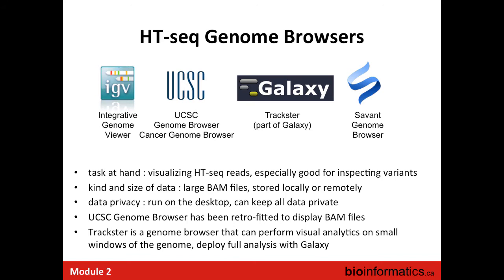I'm going to mention a few genome browsers, such as IGV, which we're going to look at in detail and use in the practical. UCSC has a genome browser that you've probably already used to browse different genomes. There is one as part of Galaxy — Trackster. The Savant genome browser is also used a lot, and it has the particularity of being able to annotate your variants as part of the browser's function, whereas a tool like IGV lets you look at reads but won't allow you to annotate a particular variant.